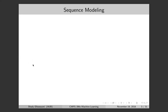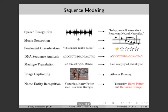RNNs are used for sequence modeling. One example is speech recognition — when you talk to Siri or Alexa, it recognizes your speech and converts it into text. The input is a sequence of spoken words and the output is also a sequence of written words, so that's sequence-to-sequence modeling.